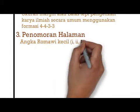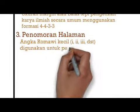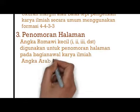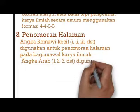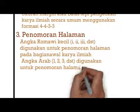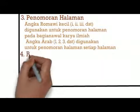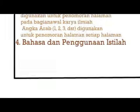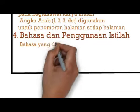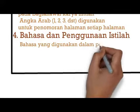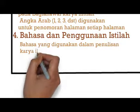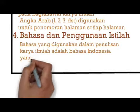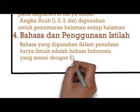Yang ketiga penomoran halaman. Angka Romawi kecil digunakan untuk penomoran halaman pada bagian awal karya ilmiah, seperti halaman judul hingga abstraksi. Angka Arab digunakan untuk penomoran halaman setiap halaman berikutnya. Yang keempat bahasa dan penggunaan istilah. Bahasa yang digunakan adalah bahasa Indonesia yang sesuai dengan ejaan bahasa Indonesia, mengacu pada Permendikbud No. 50 tahun 2015. Istilah yang digunakan adalah istilah dalam bahasa Indonesia atau istilah serapan bahasa asing yang sesuai dengan Kamus Besar Bahasa Indonesia.